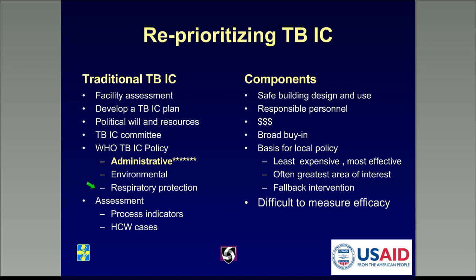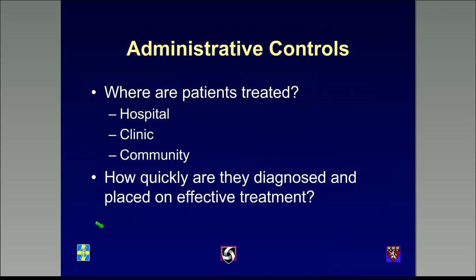Respiratory protection is really our last-ditch effort — assuming nothing else is working perfectly, we then offer workers respirators to protect them from TB infection. Another part of traditional TB infection control is assessment of the efficacy of these measures, which is often quite difficult. Sometimes we rely on process indicators — are people opening windows, are patients being diagnosed and treated effectively — and sometimes we depend on cases of tuberculosis among healthcare workers. We'll be focusing heavily on administrative controls today, though I'll also mention environmental controls and respiratory protection.